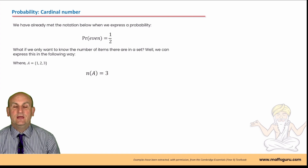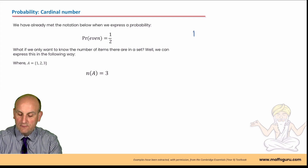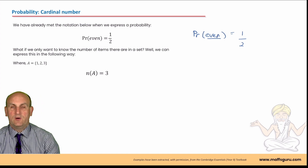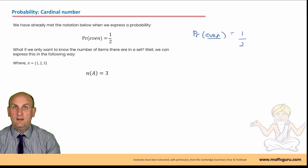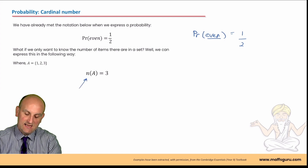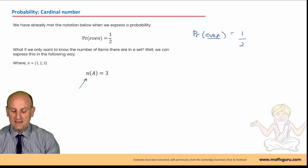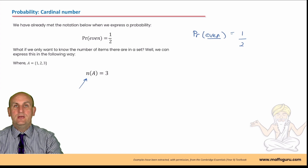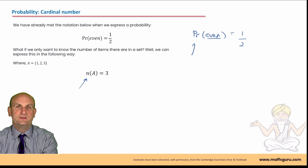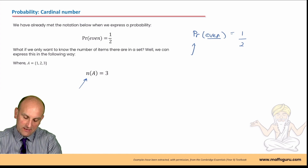A cardinal number - we've actually already met this notation when we express a probability. You write the probability and then you write the worded description and then some sort of fraction. So for example the probability of even equals one half. N here stands for cardinal number - it represents the number of. So P stands for probability giving a fraction or decimal or percentage, and N is just the number of items.